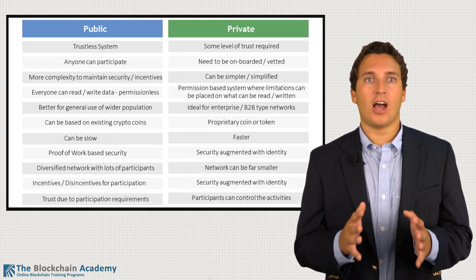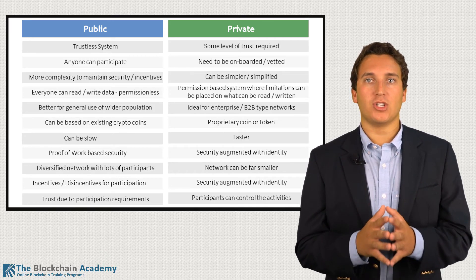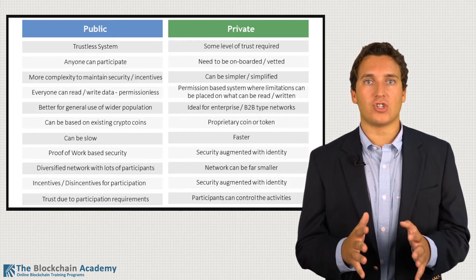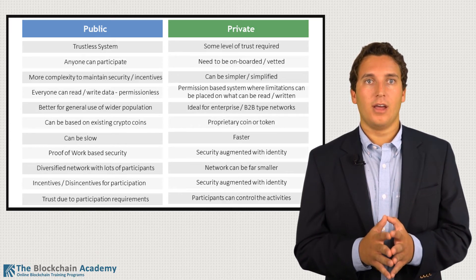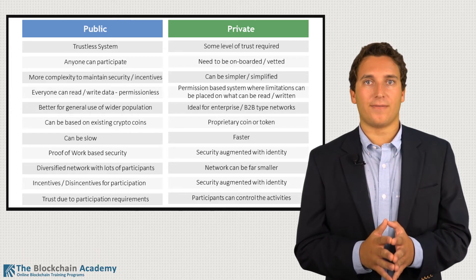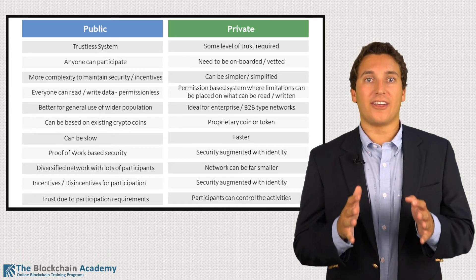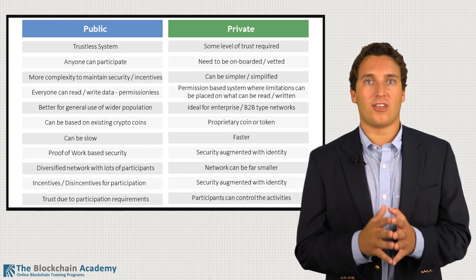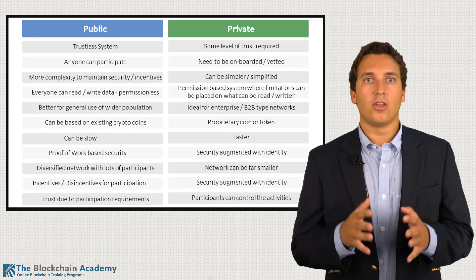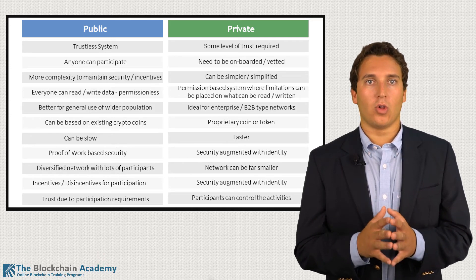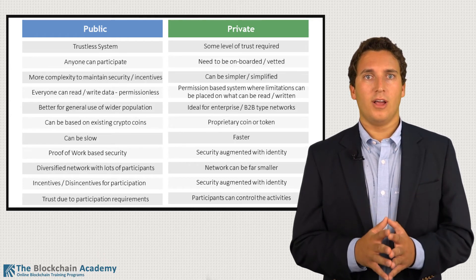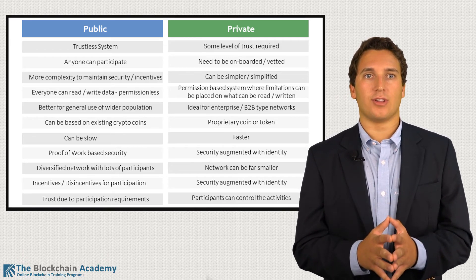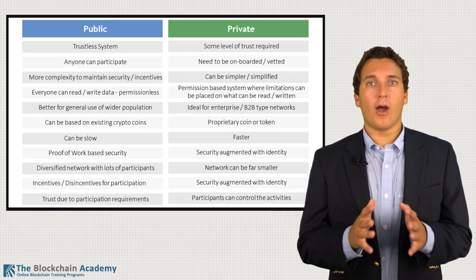In a public blockchain, which is commonly referred to as a permissionless blockchain, cryptocurrencies and other tokens are exchanged in an open source program. The public blockchain is classified as permissionless, as there are no inhibitors preventing one participant from transacting with another. No one single person or entity has control over the blockchain, and there are no defining requirements to the terms of a transaction that can be agreed upon.